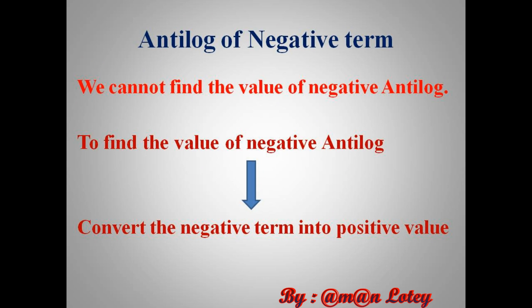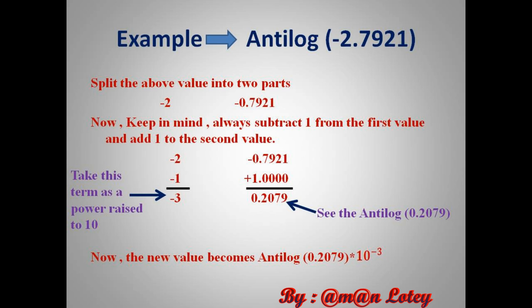Now let us discuss how to find the value of antilog of a negative term. We should know that we cannot directly find the value of a negative antilog. To find the value of a negative antilog, first convert the negative term into a positive term. Here is an example: antilog of minus 2.7921. The first step is to split the above value into two parts: one is minus 2 and the second one is minus 0.7921. Always keep in mind, we should subtract 1 from the first value and add 1 to the second value. After the calculation, we get minus 3 and 0.2079, as shown.